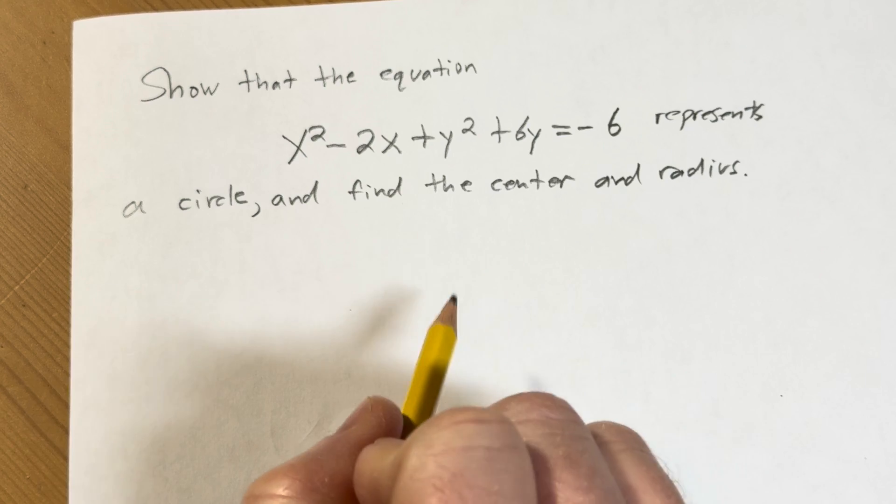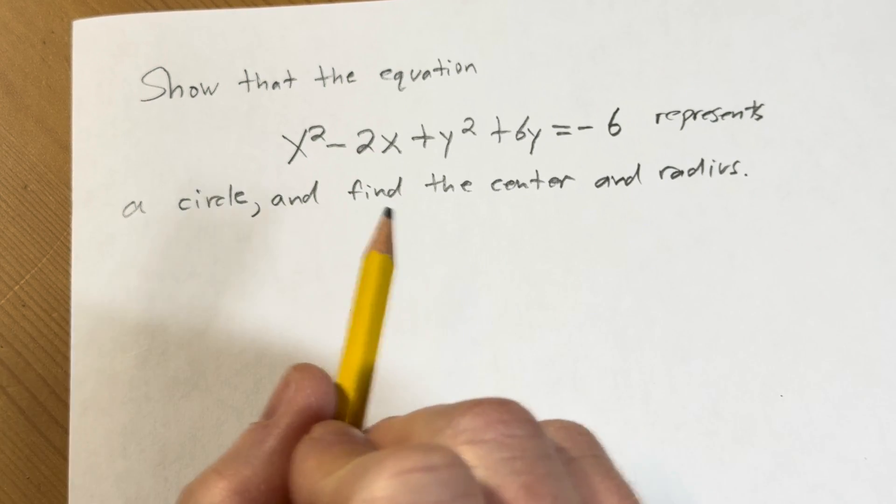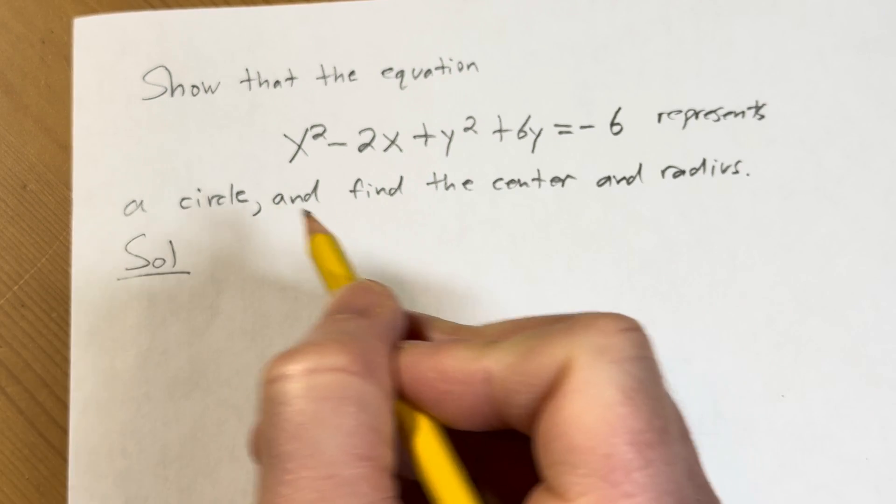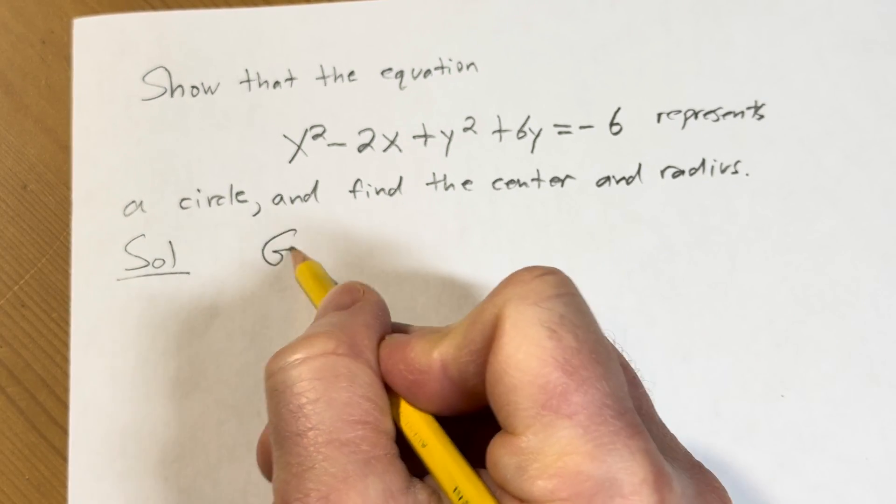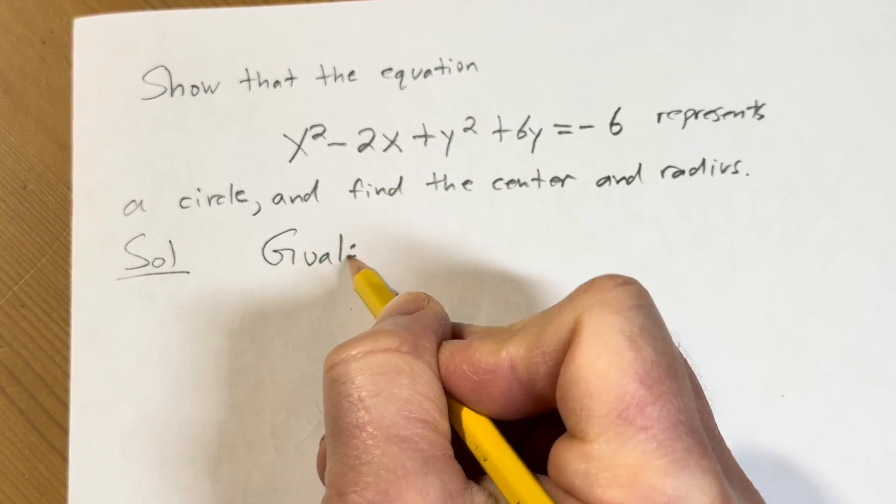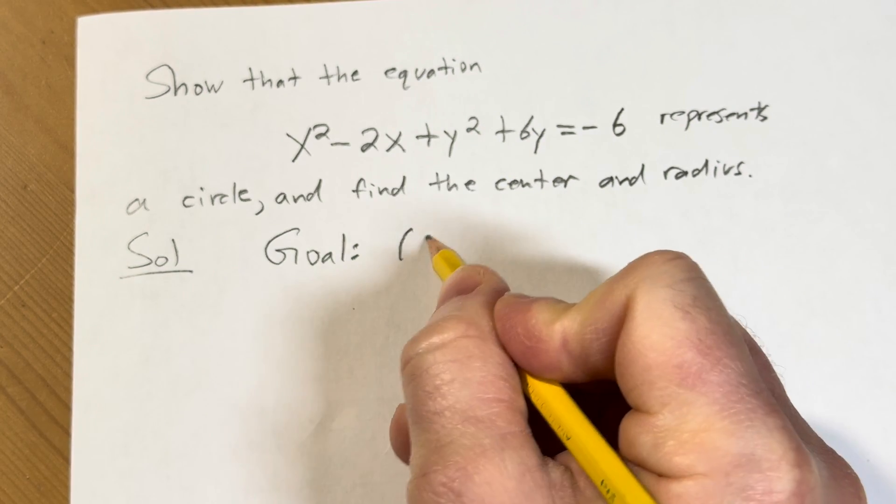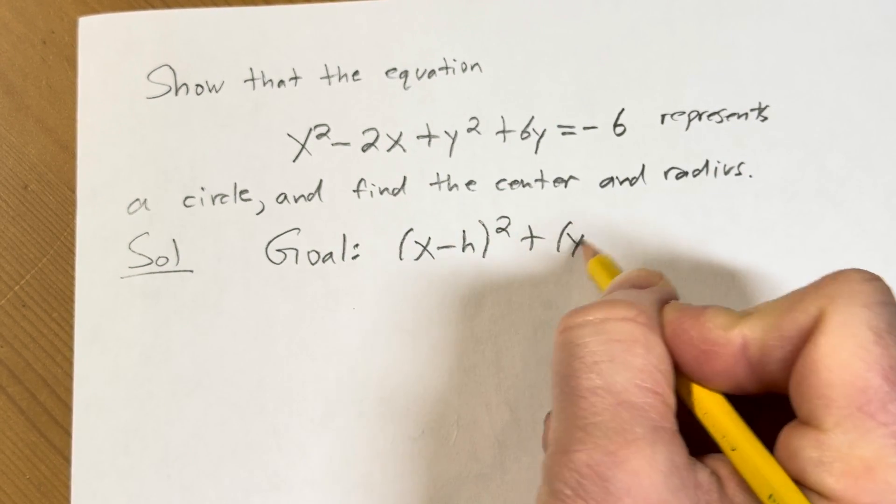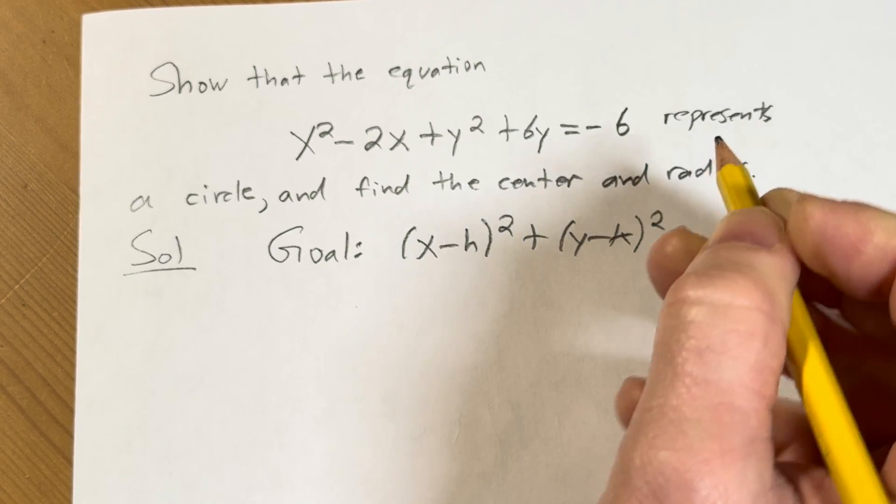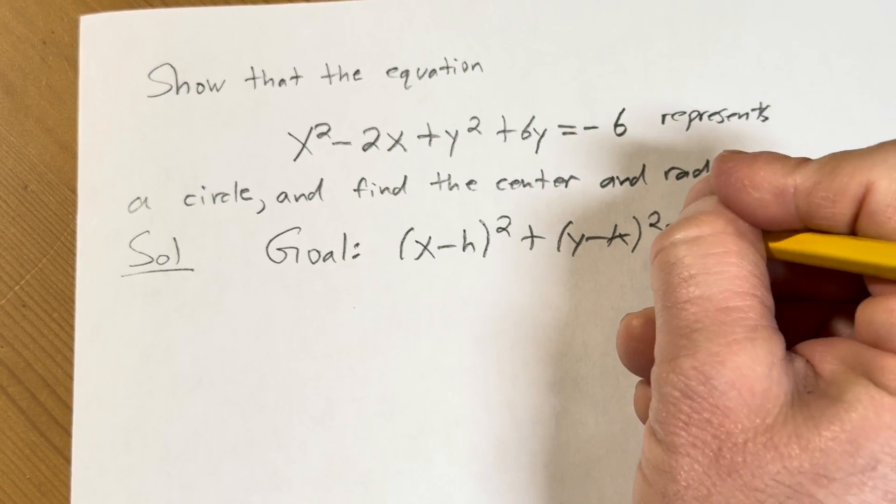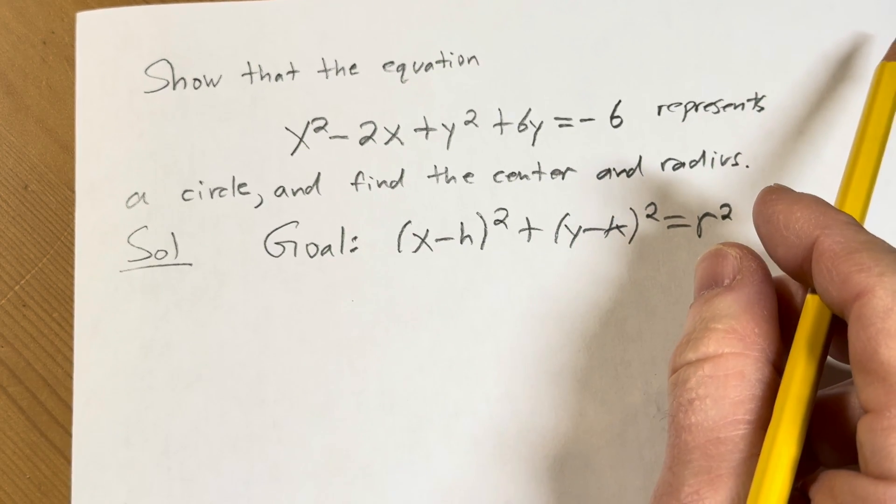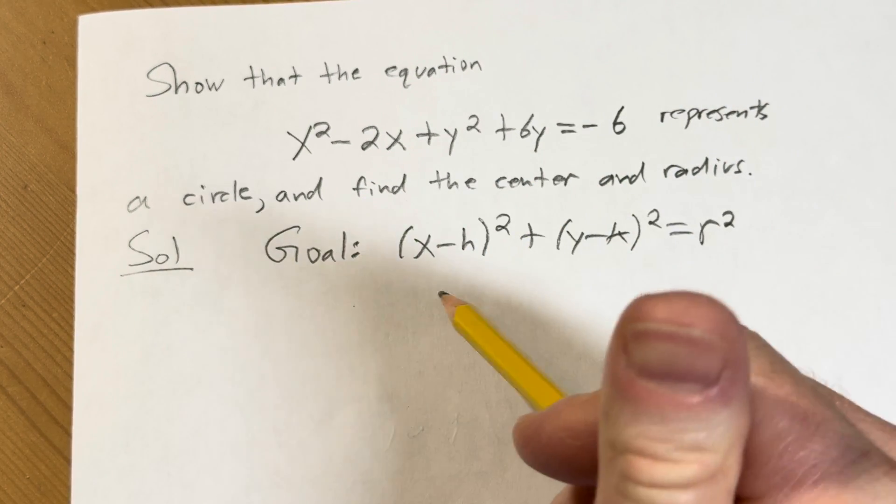So we're going to show this equation represents a circle and we're going to find the center and radius. Let's go ahead and go through it. Solution. So the goal, just so you know the goal, the goal here is to get to this equation: x minus h quantity squared plus y minus k quantity squared equals r squared. There's more thunder, pretty scary out there.